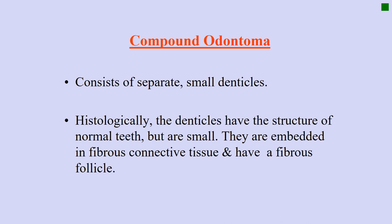Moving on to odontomes, which are classified as compound and complex. Odontomes are the most common benign odontogenic tumors, with ameloblastoma second. Compound odontomes are called compound when they consist of separate small denticles. Histologically, denticles are small miniature-sized teeth. The denticles have structures of normal teeth but are small, embedded in fibrous connective tissue with a fibrous follicle.